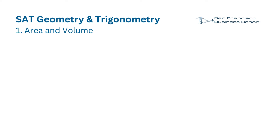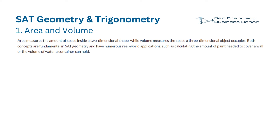Area and volume. Area measures the amount of space inside a two-dimensional shape, while volume measures the space a three-dimensional object occupies. Both concepts are fundamental in geometry and have numerous real-world applications, such as calculating the amount of paint needed to cover a wall or the volume of water a container can hold.